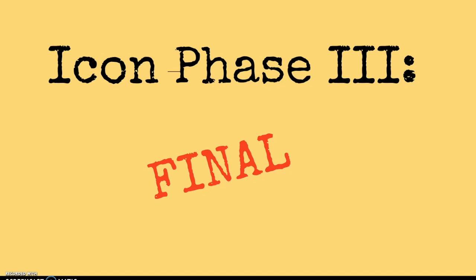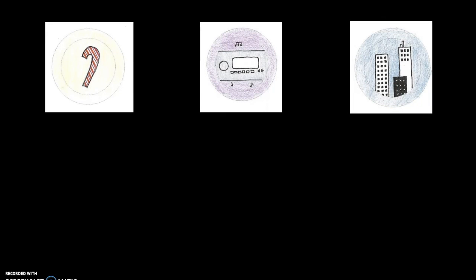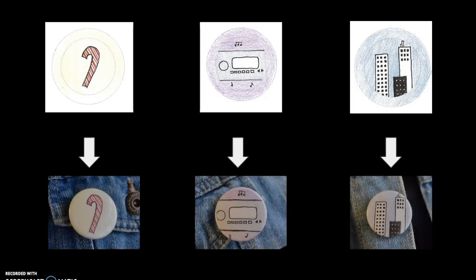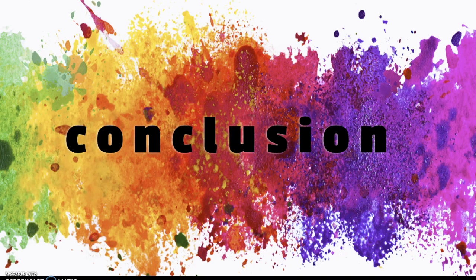The final phase of our icon project was making the final icons and adding color, then making each icon into a button. I chose to color the background of the candy cane icon yellow to bring out the red of the candy and because I wanted a happy, lighthearted feeling that comes with the Christmas season. For the car radio, I wanted a soft pastel color to reflect the calming aspects of music — I also wanted a vintage feel, so I chose a lilac purple. Lastly, for the cityscape, I used a deep midnight blue to accentuate the beauty of the skyline. I really enjoyed all the projects in pre-communication design. They helped me develop a new grasp on what it means to be a designer — not only creating pieces that are enjoyable to look at, but also functional and serving a specific purpose.